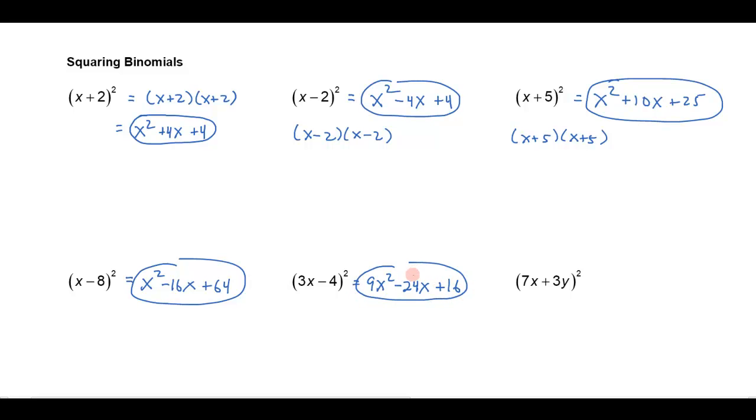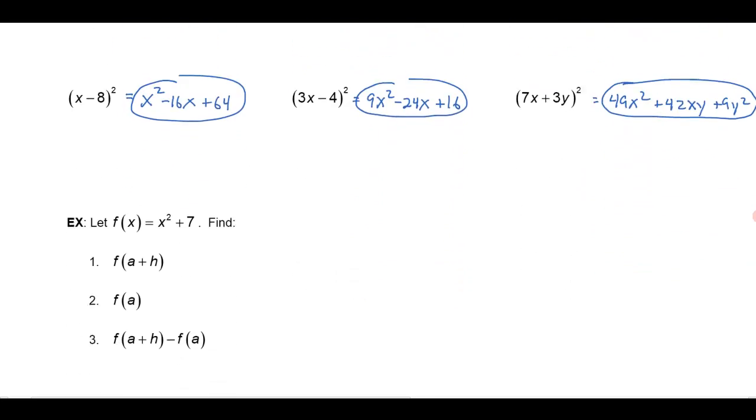We've just squared the binomial. So if I had this one, I'd get 7x squared, that's going to be a 49x squared. 7x times 3y, that's 21xy. 21xy doubled is 42xy, and then the 3y squared would be a 9y squared, and we've squared the binomial. So I hope you'll learn that trick. It simplifies many things later on in algebra, saves you a lot of time.